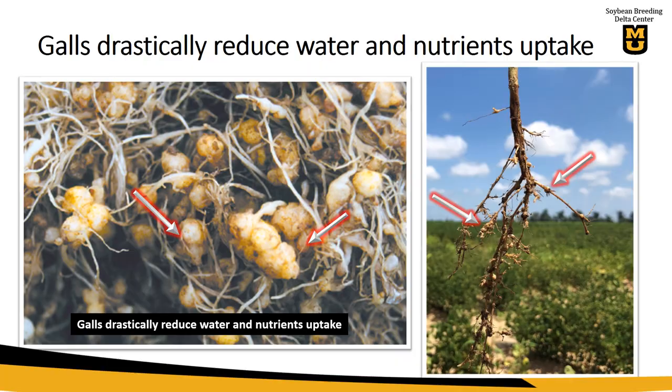Nematodes, after infecting the plant, cause the formation of galls. Galls are these giant masses that you can actually see in the roots if you pull a plant, like this picture on the right. And as you can expect, the more galls that you have, the more reduced the nutrient and water uptake will be.